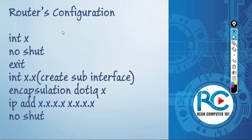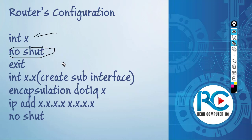For the router configuration, we have to go to the interface that connects to the switch and do a no shutdown on that interface first. We don't have to configure any IP on that physical interface, and then exit. After that, we're going to create a sub-interface on that physical interface - just be patient, I'm going to show you in the next minute.